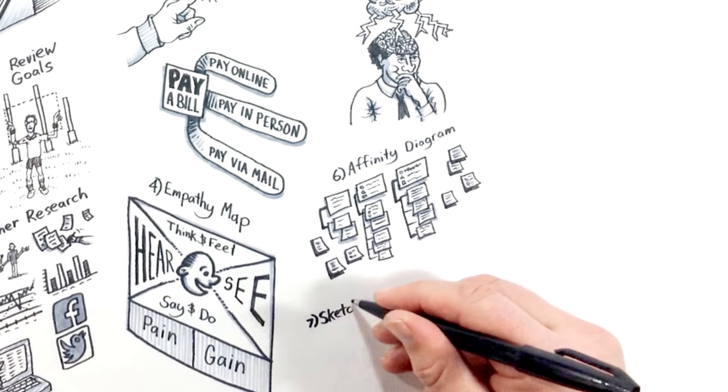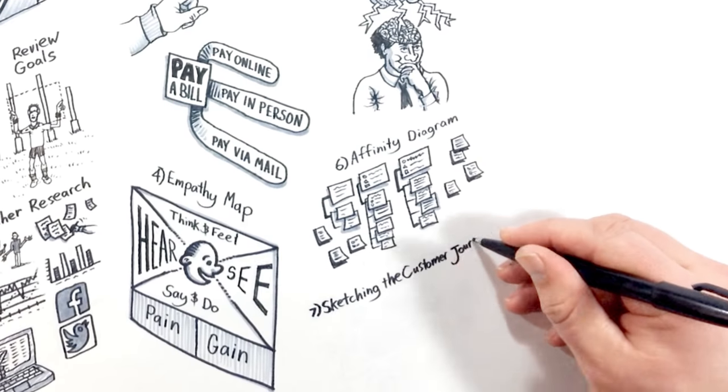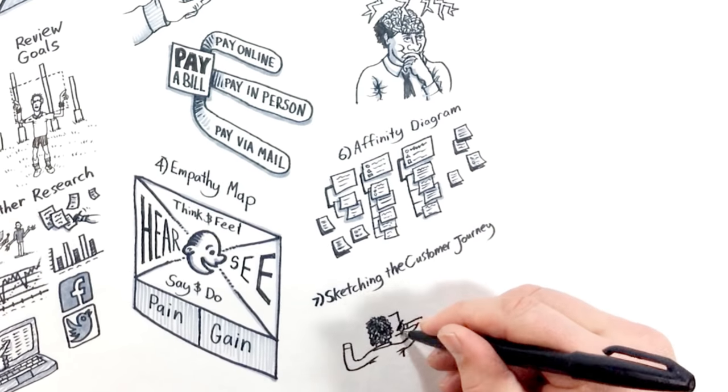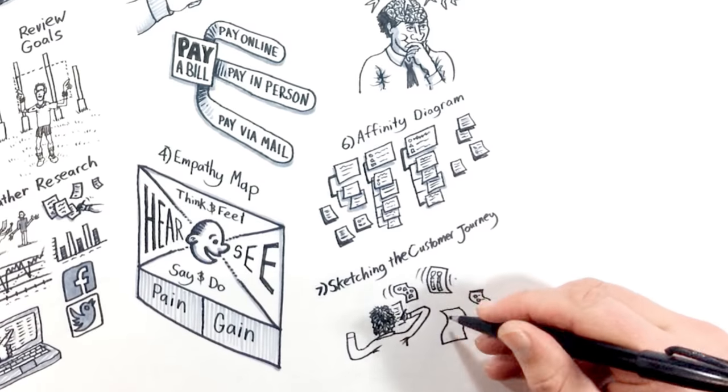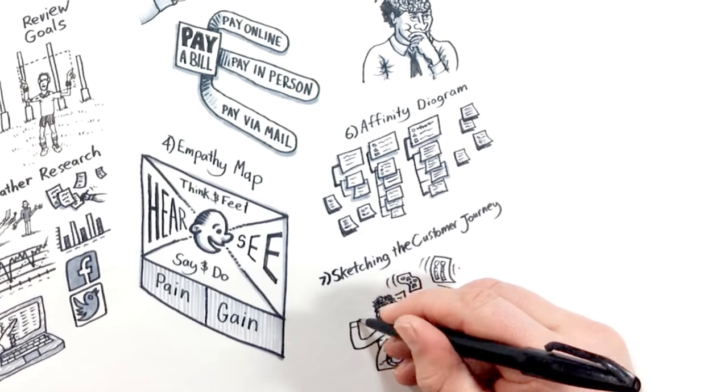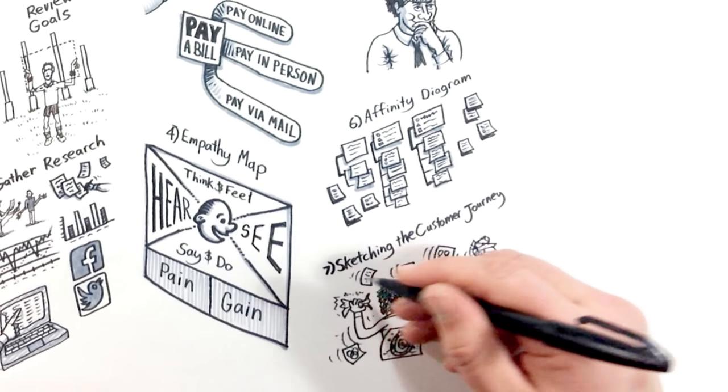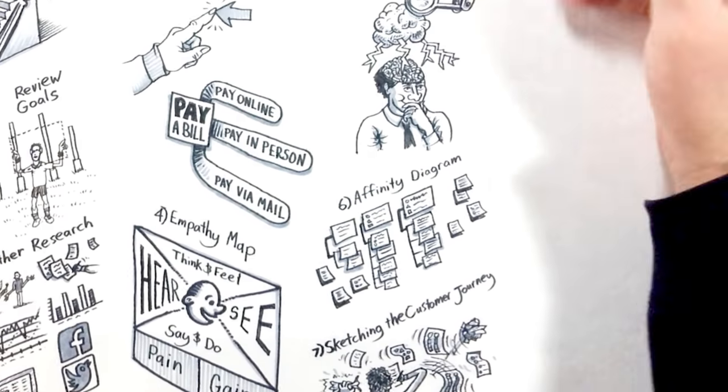Number seven, this is the part you've been waiting for, sketching the journey. This is where we put together all the ideas the team generated for how to improve the future customer journey. Get creative on how you lay it out. There's no one way of sketching a customer journey.